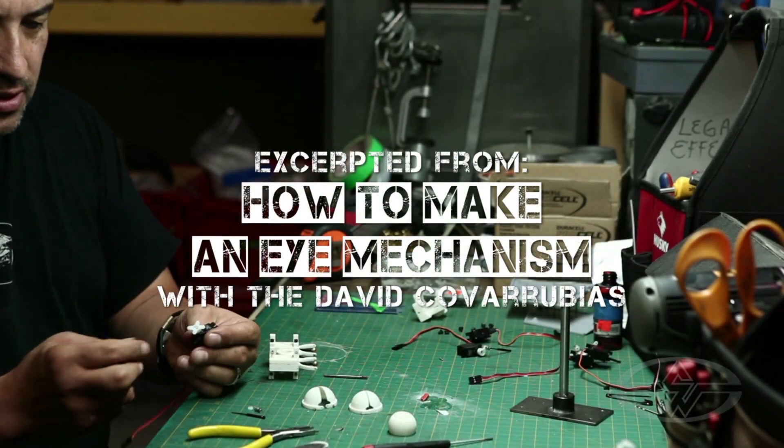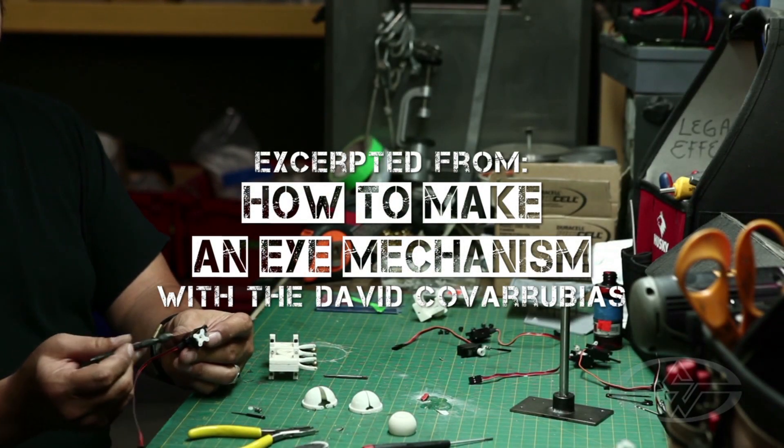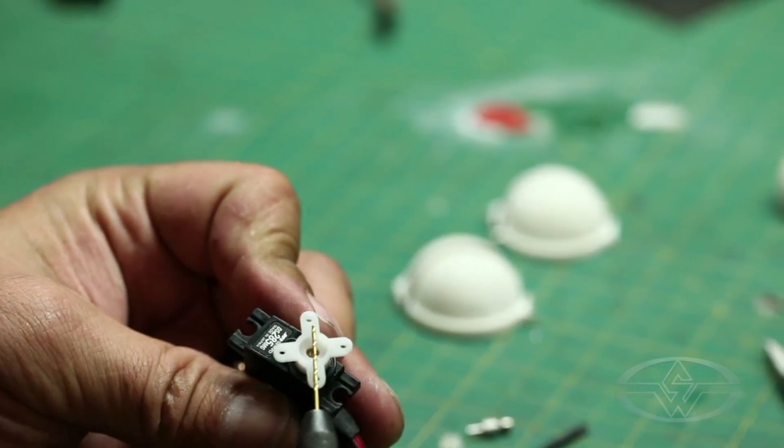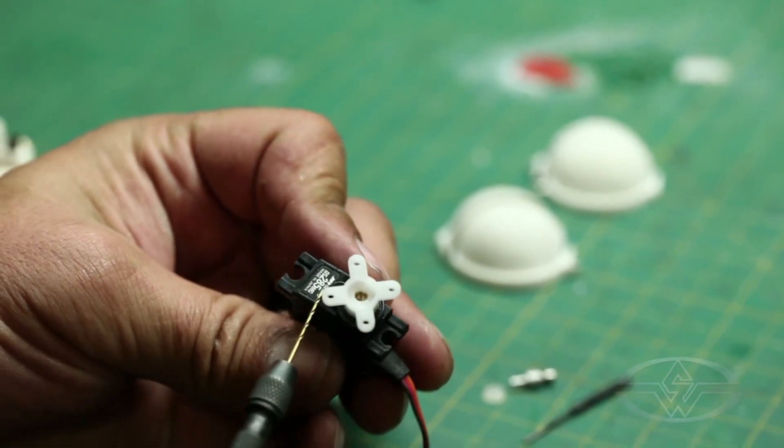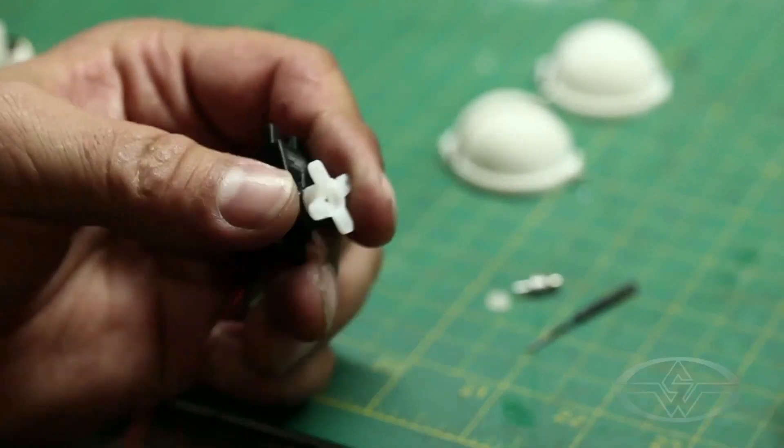When you get your servo out of the box, you basically get a servo and you get a servo horn. This is the one that comes with this JR servo and it's the one we designed around.